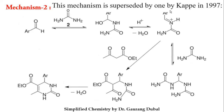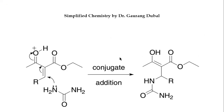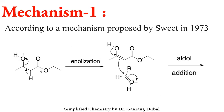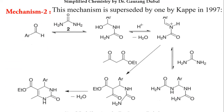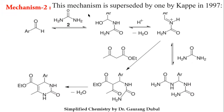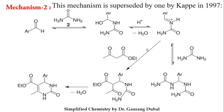The next mechanism was proposed by Kappe in 1997. The key difference from the first mechanism is the first step: in the Sweep mechanism, the enolate attacks the carbonyl of the aldehyde first, condensing active methylene and aldehyde. In the Kappe mechanism, urea first donates its lone pair to the carbonyl carbon of the aldehyde, forming an intermediate. This intermediate undergoes tautomerization, reacts with ethyl acetoacetate, cyclizes, and loses water to give the pyrimidinone product. So two mechanisms are available in the history of pyrimidine synthesis.